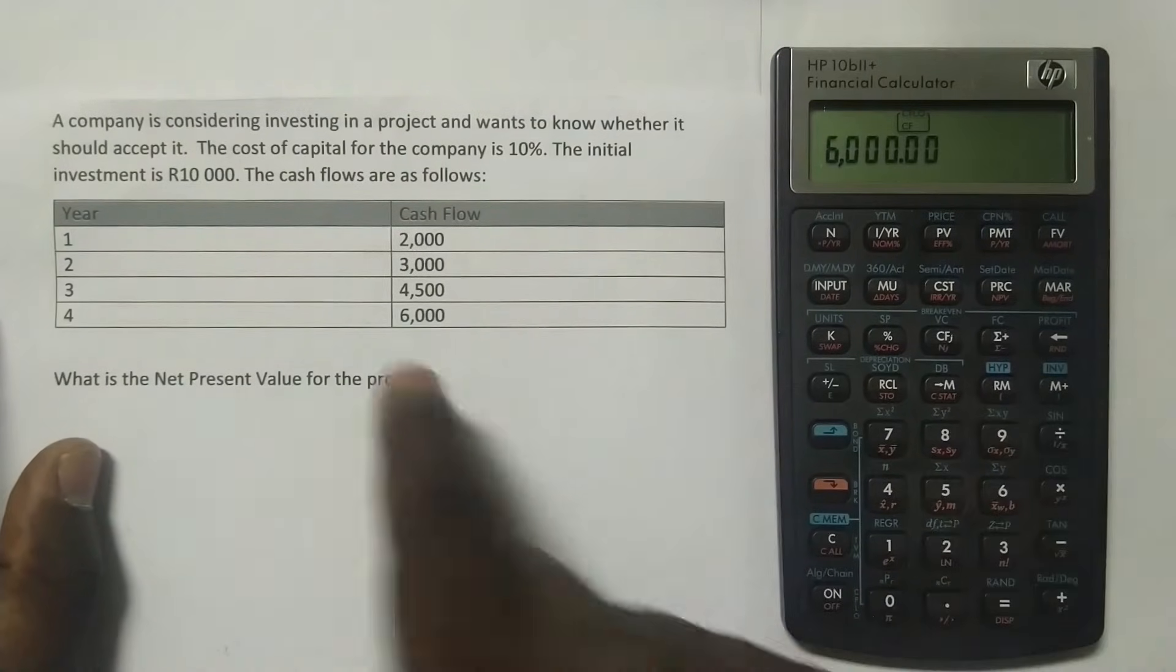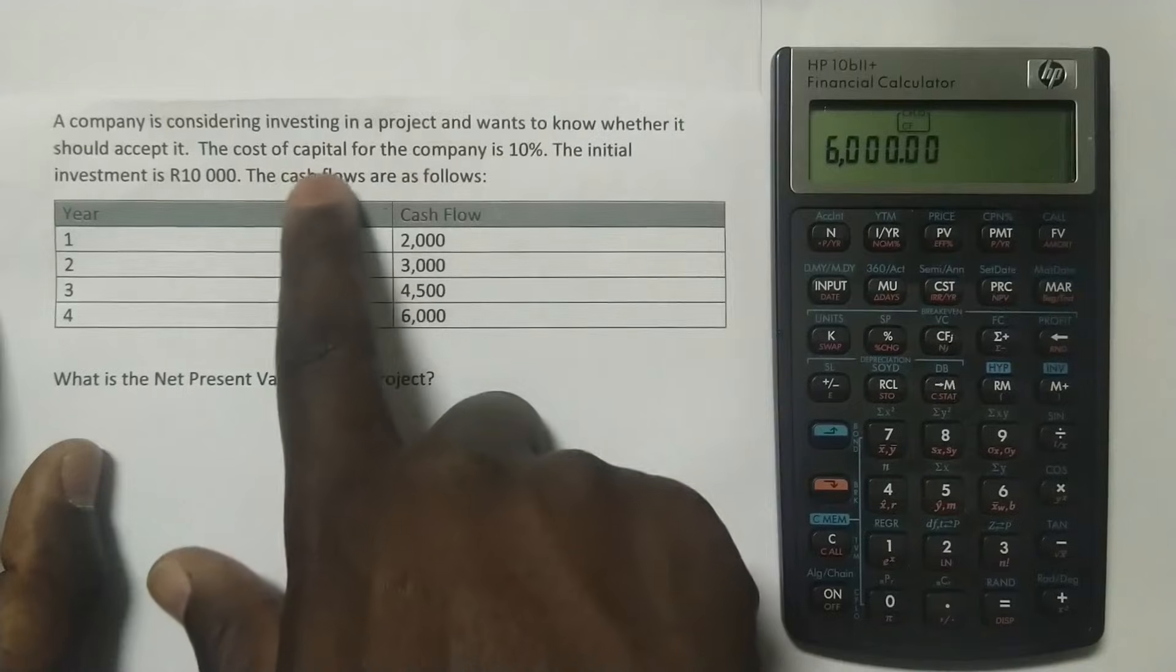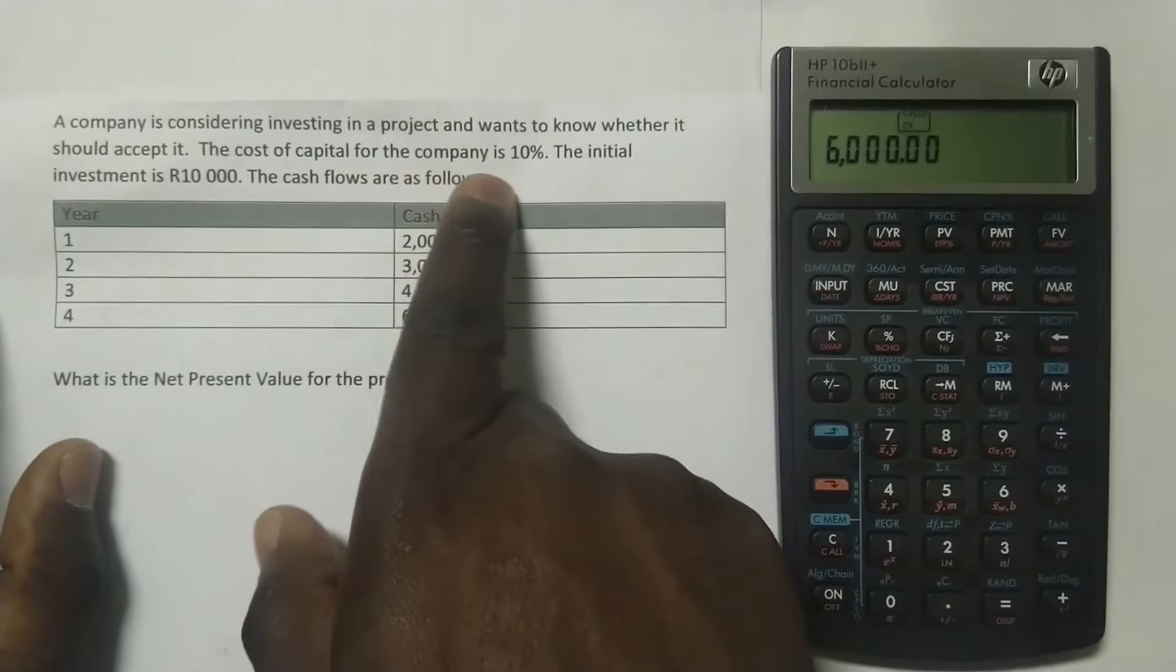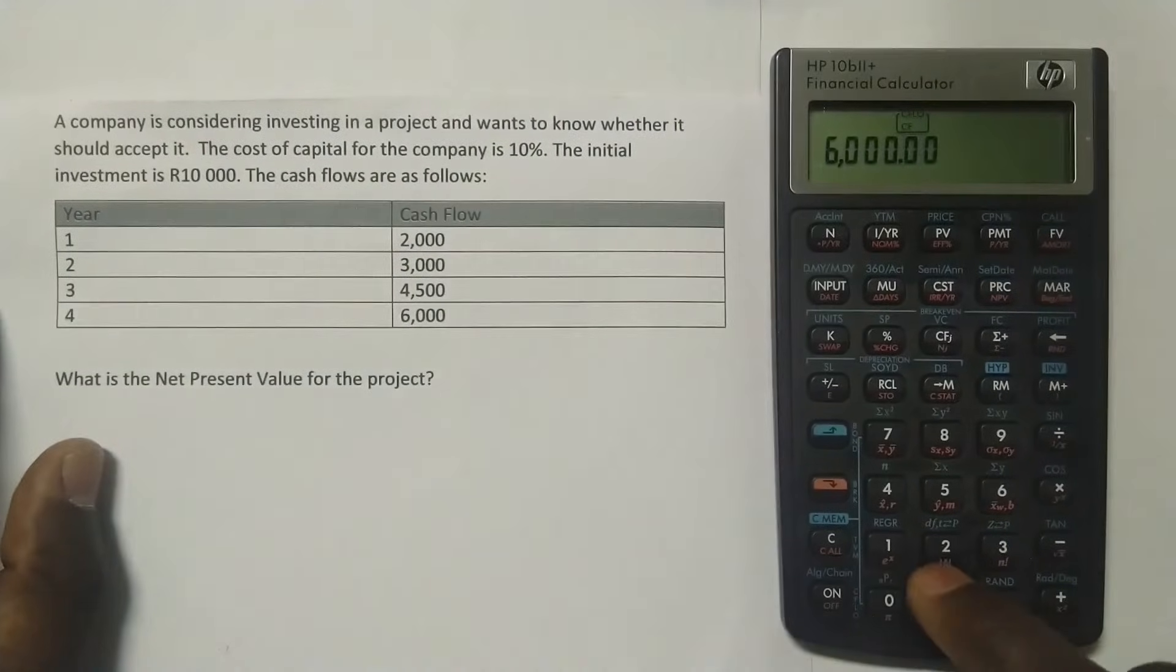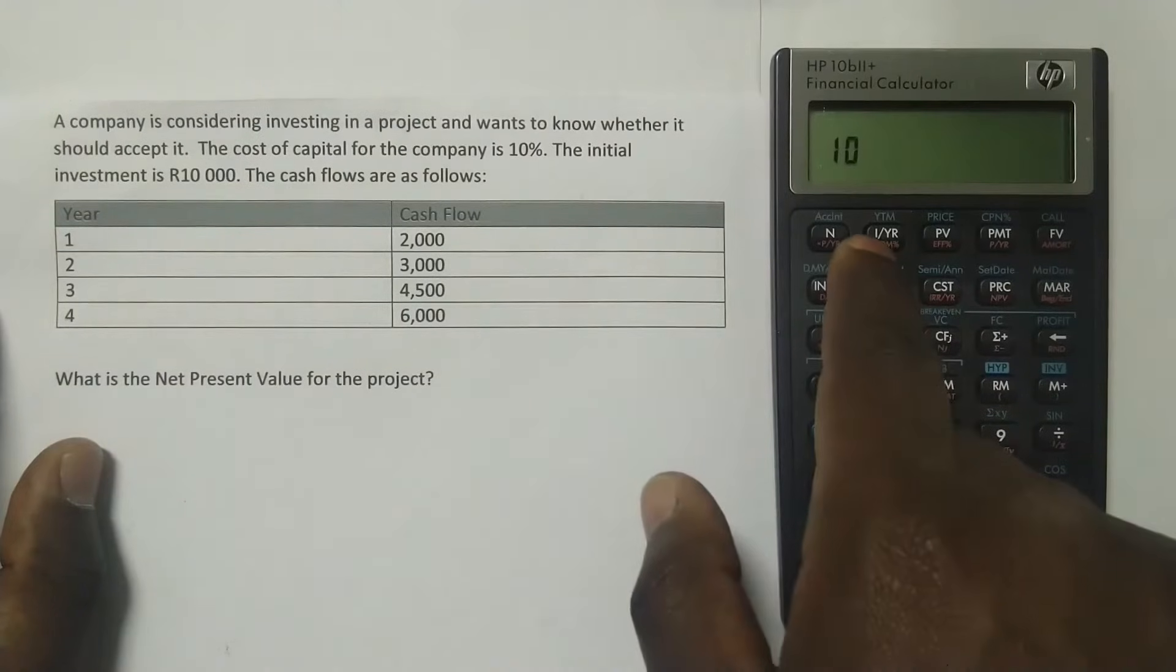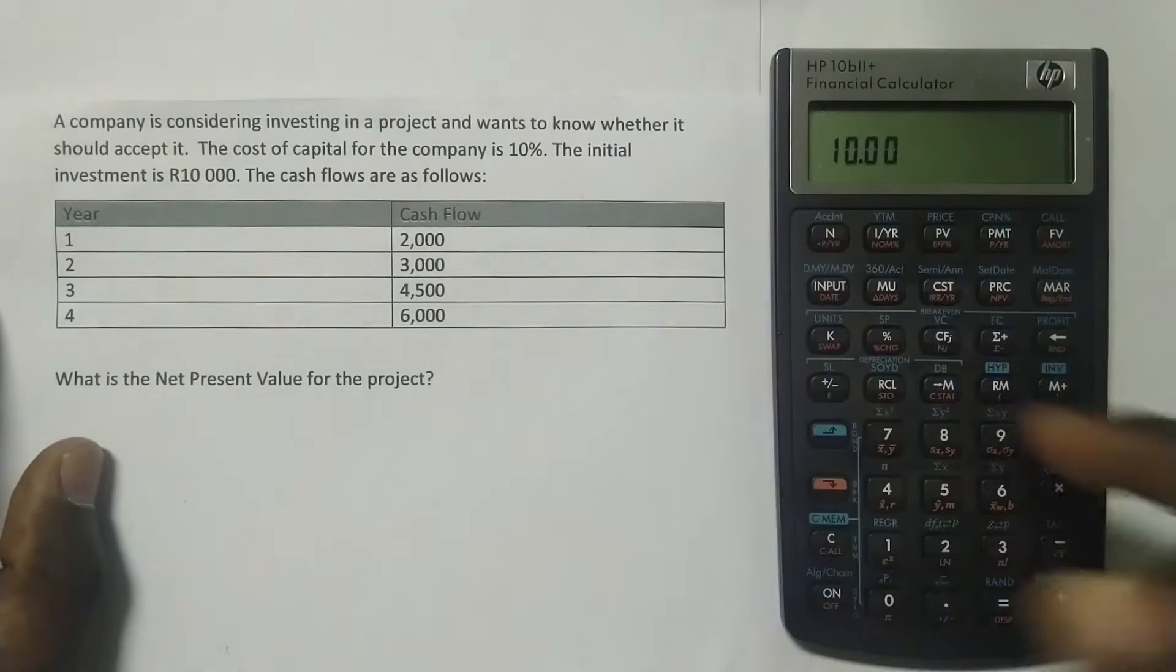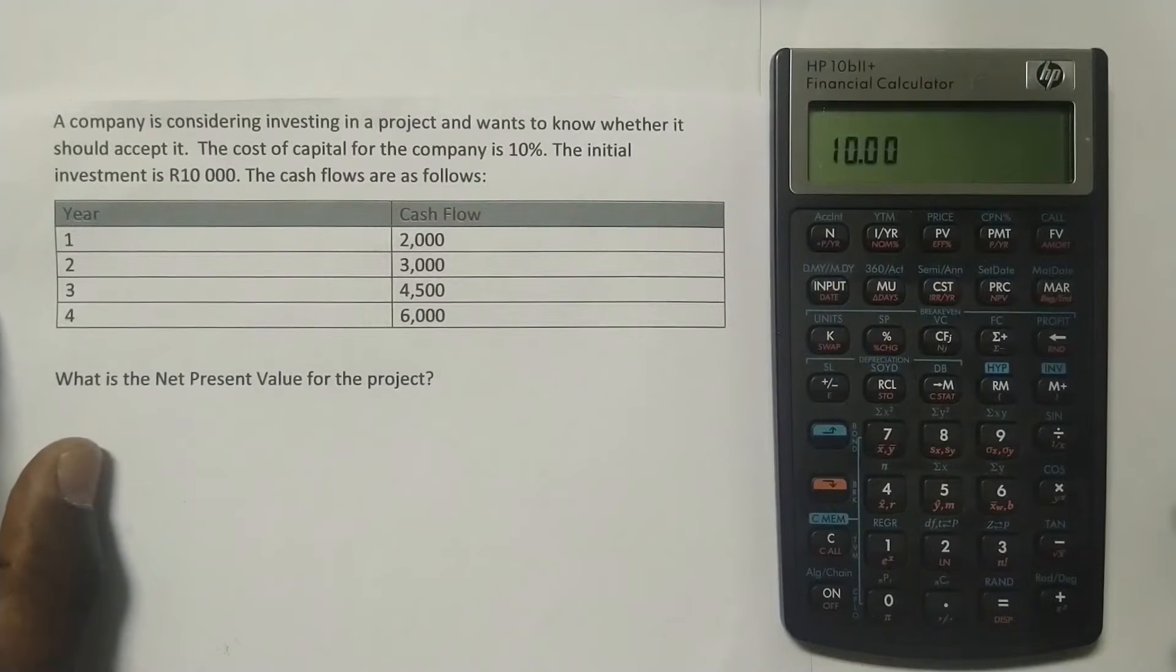Now, at how many percent do we discount these cash flows? It's at 10%, because we are told here that the cost of capital for the company is 10%. So all you need to do is just put 10, and then press here, it's written I slash YR. And now it has registered the 10%. And now all we need to do is to compute the NPV.